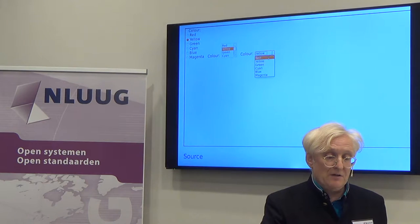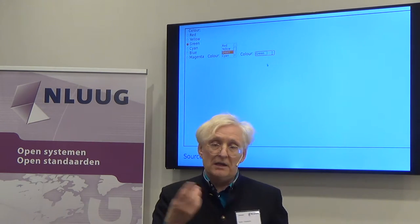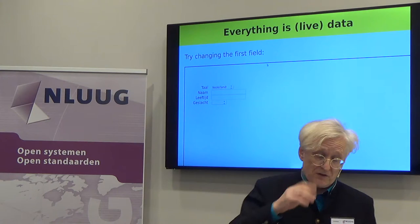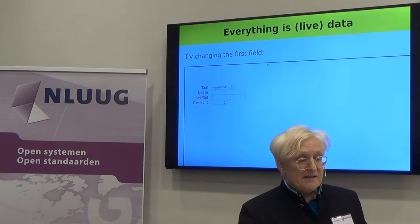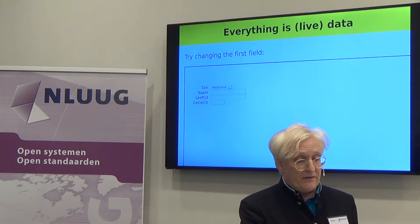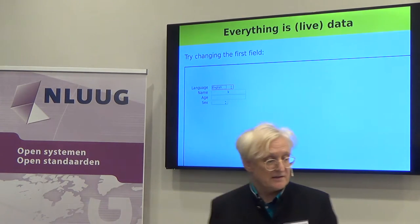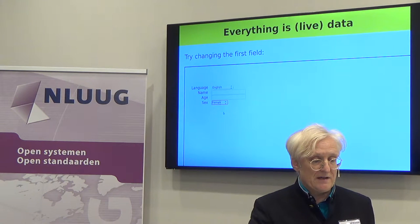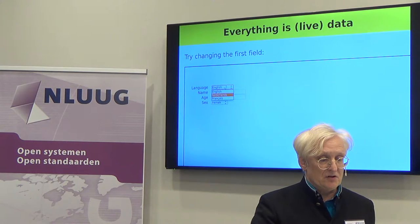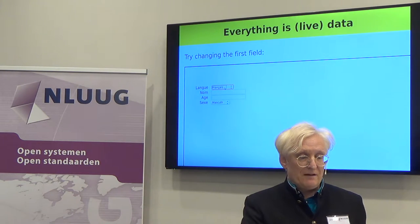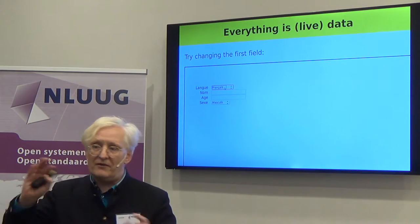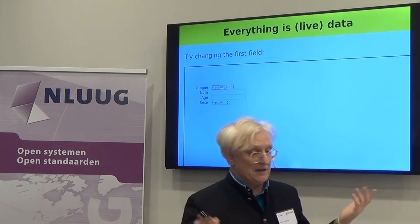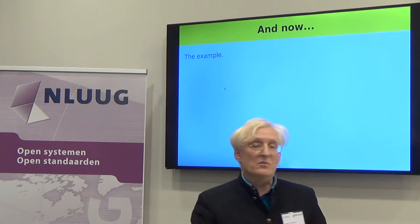These are absolutely identical code underneath, just being styled in a different way with stylesheets. The other thing I want to show you is live data — everything is live, everything is data. So if I change this to English, everything changes to match. And even if I select one of these values and then change to Dutch, that changes to 'man'; French changes to 'masculine'. All the data is live, everything gets updated automatically. You just have to say this is bound to those data values, and it all happens automatically.